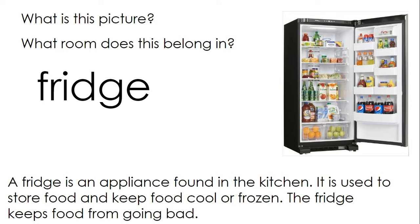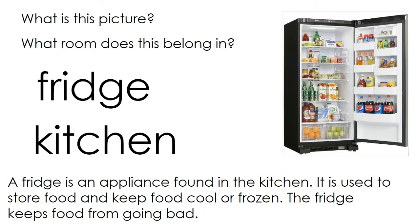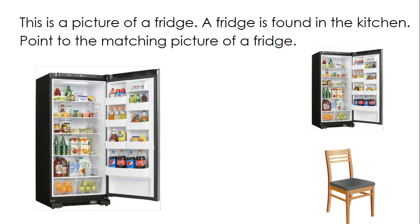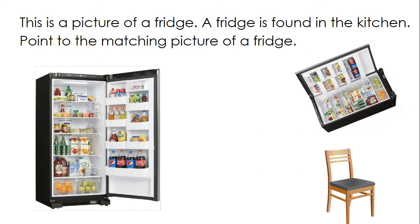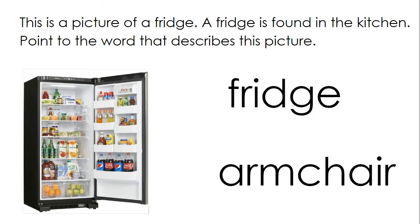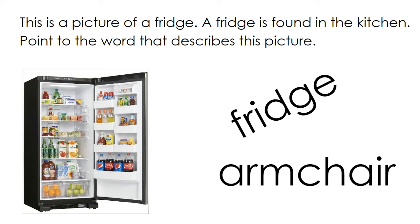What is this picture? This is a fridge. And what room does this belong in? It belongs in the kitchen. A fridge is an appliance found in the kitchen. It is used to store food and keep food cool or frozen. The fridge keeps food from going bad. This is a picture of a fridge. A fridge is found in the kitchen. Point to the matching picture of a fridge. You made a match, good for you. Point to the word that describes the picture. Good, fridge.